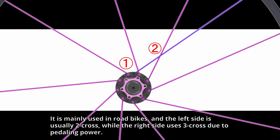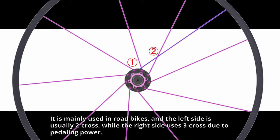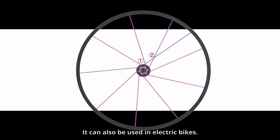It is mainly used in road bikes, and the left side is usually two-cross, while the right side uses three-cross due to pedaling power. It can also be used in electric bikes.